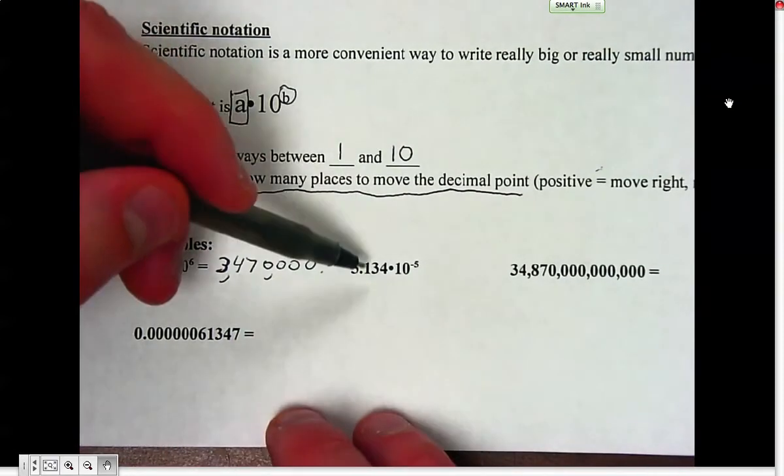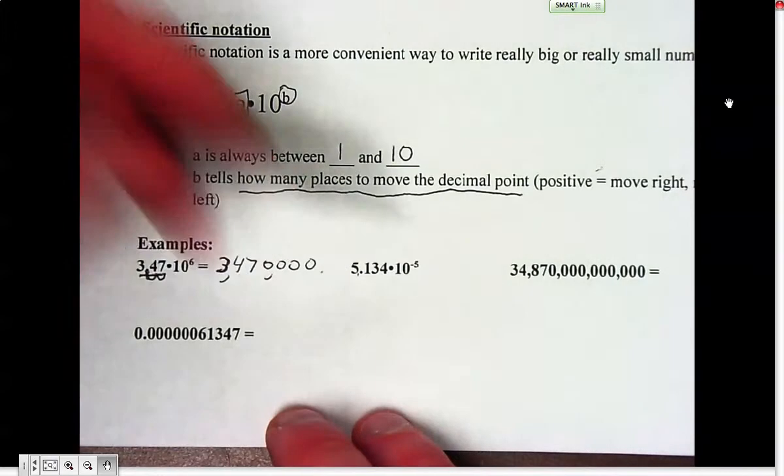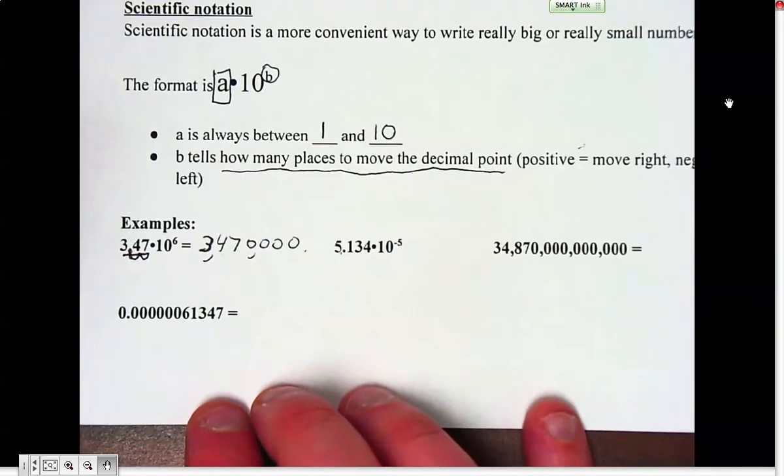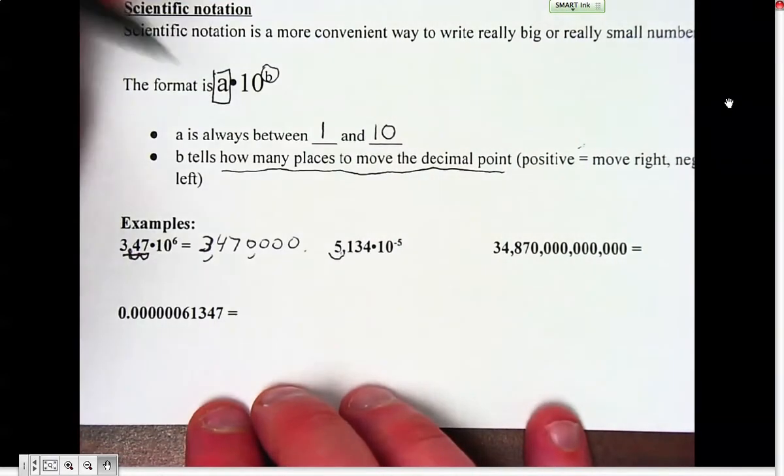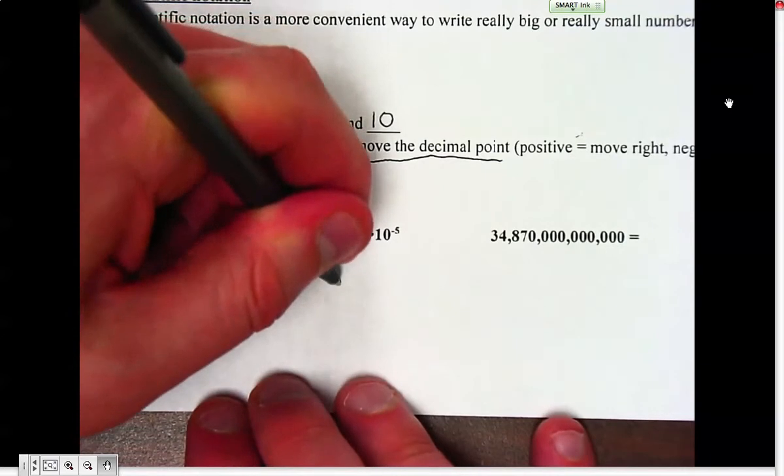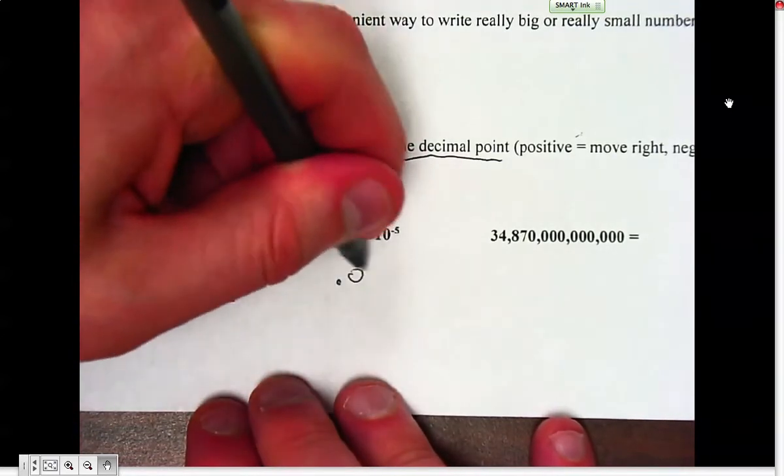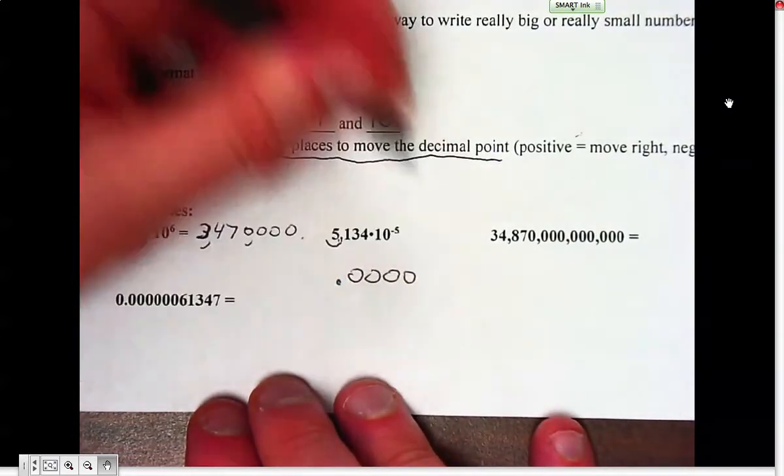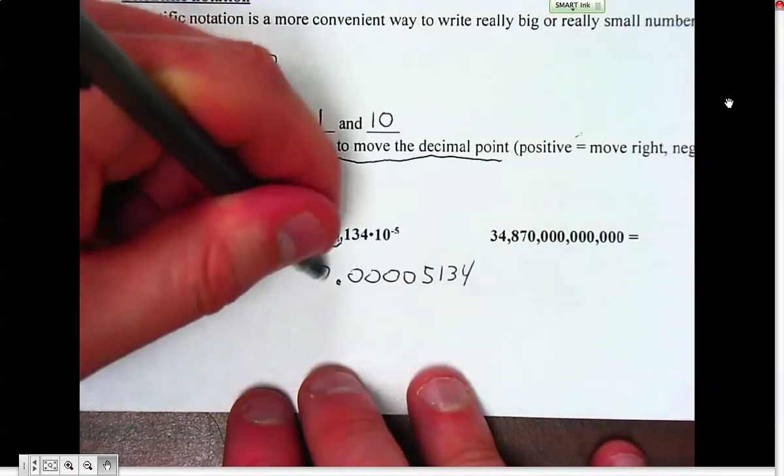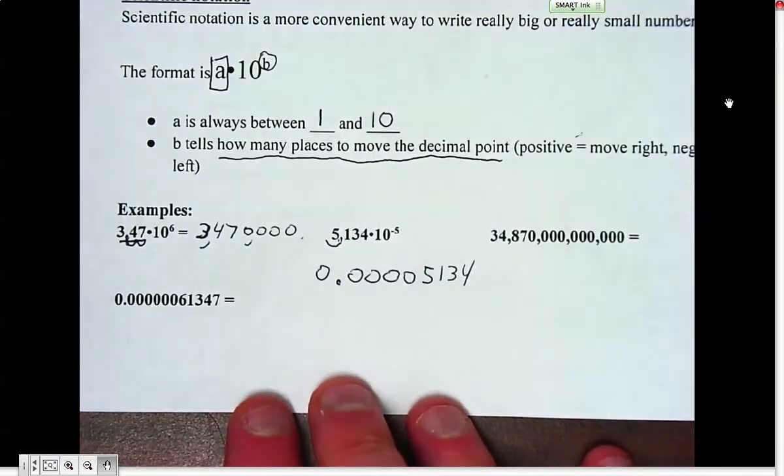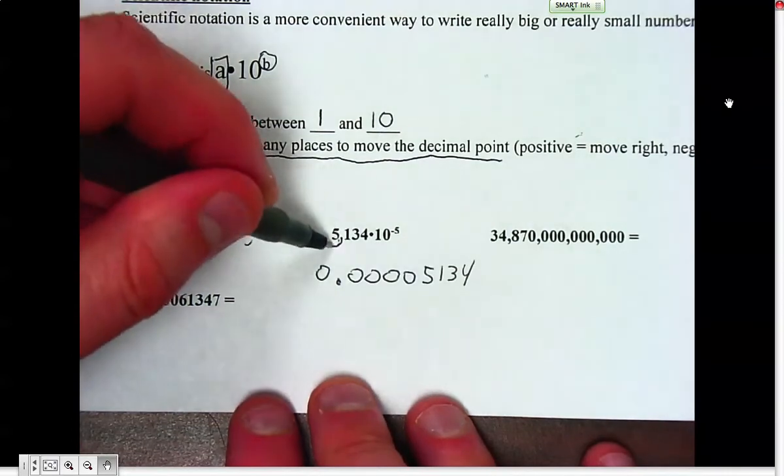When the exponent is negative, I'm going to move the decimal point to the left five places. There's one place. I need to move it four more, so I'll have the decimal point, then 1, 2, 3, 4 zeros, and then the 5, 1, 3, 4. Sometimes it's nice to put a zero in front to make it easy to read the decimal point: 0.00005134.